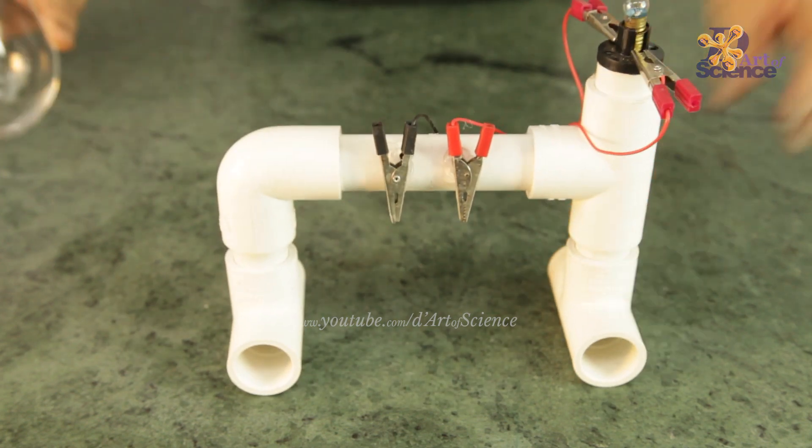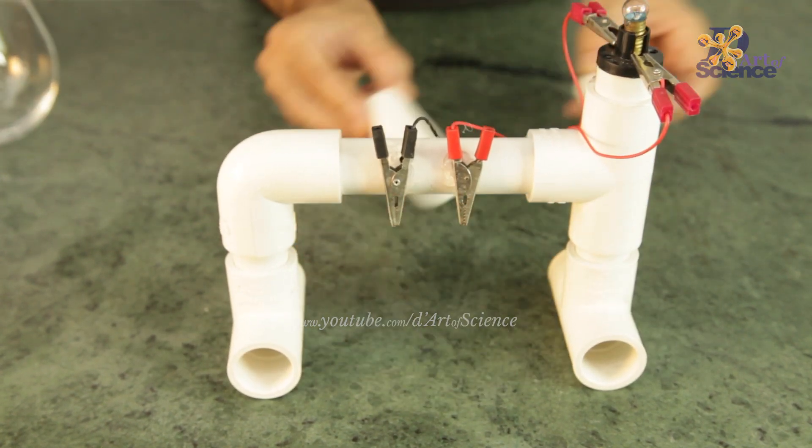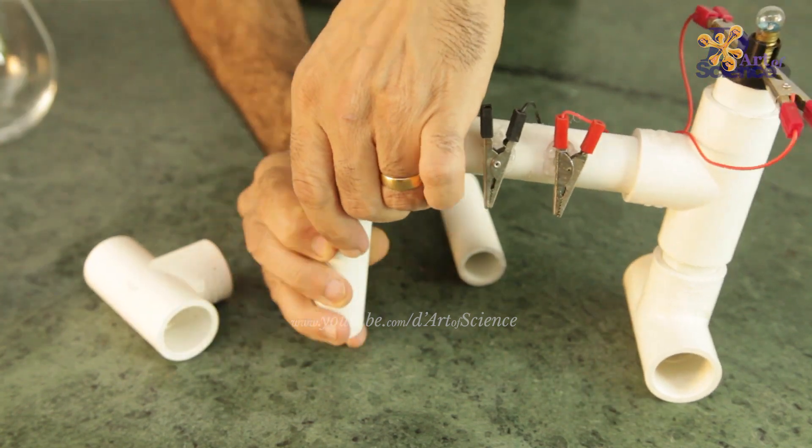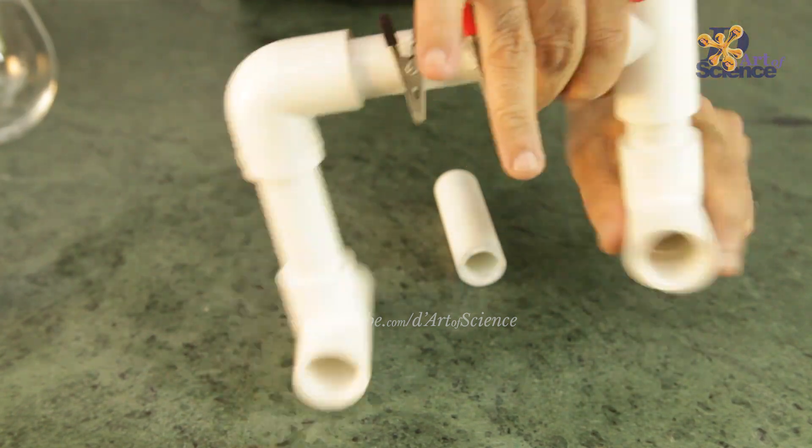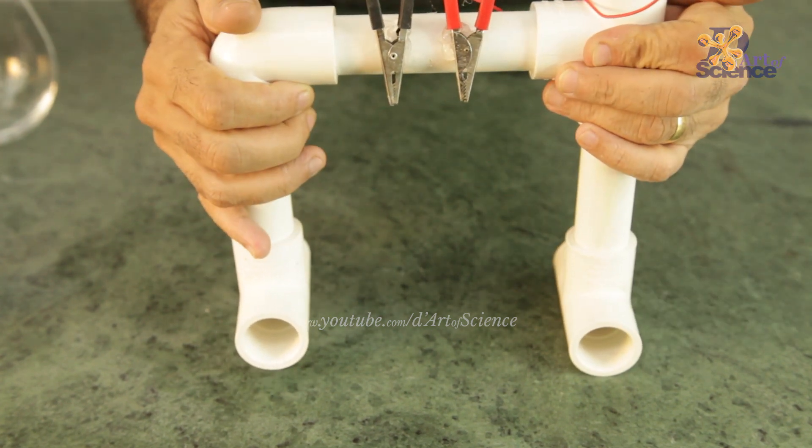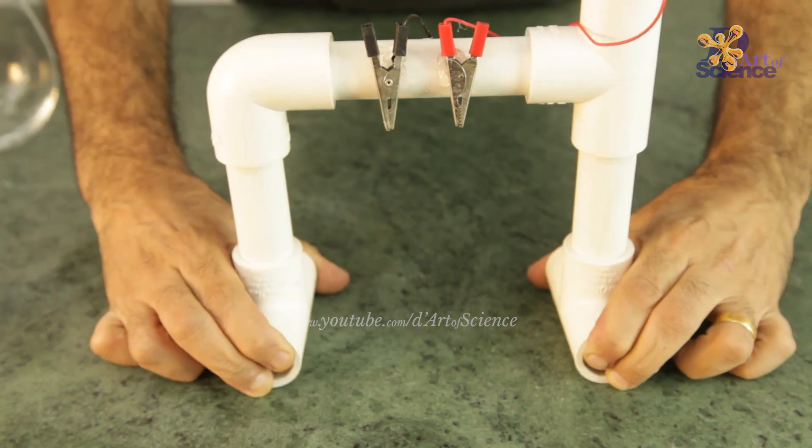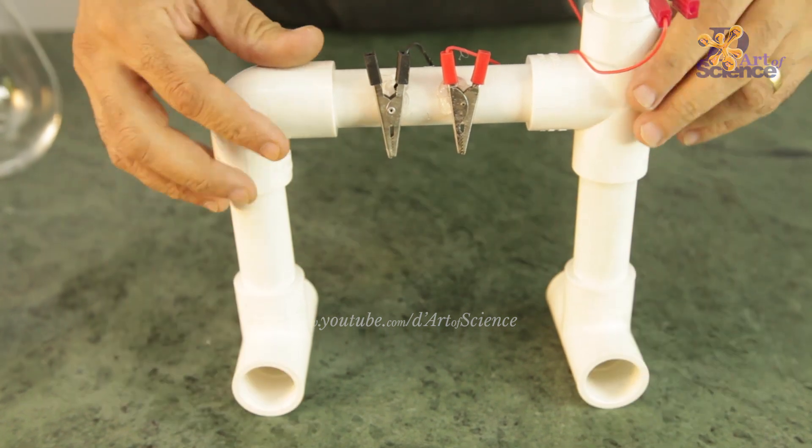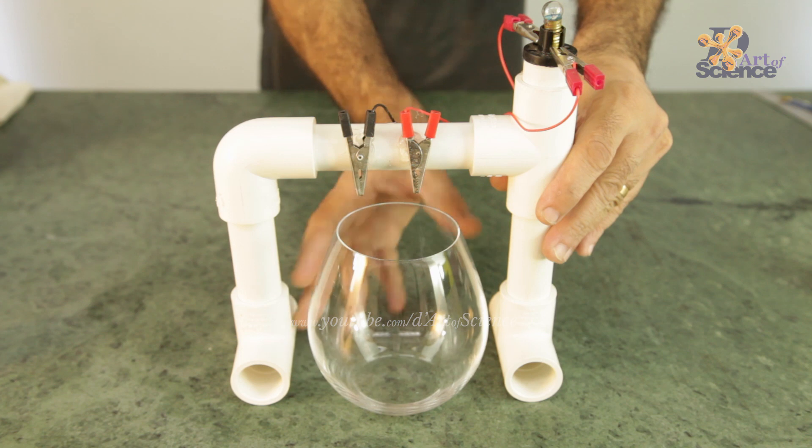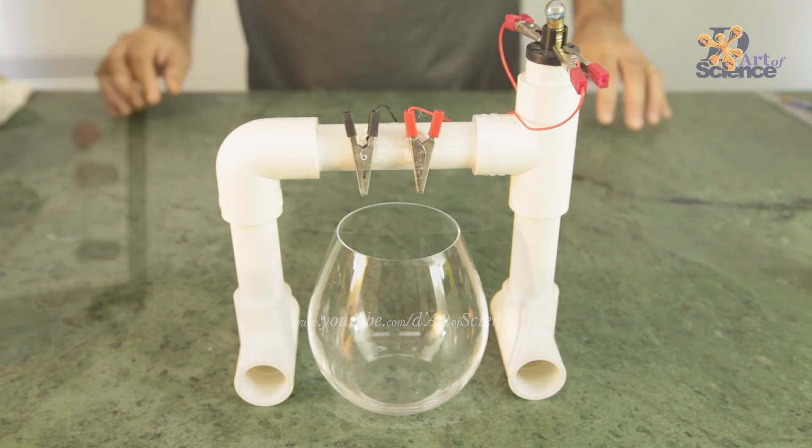This time we will use a bigger glass. So first we need to lengthen the legs of our cute little animal structure. We need two pipes of 7 cm each. These should be as the same diameter as the ones that are used in the structure. We will replace the small legs with these long legs. I am sure some of you must be thinking, why is it not that easy to become tall in real life as well. Now that the glass fits easily, I can proceed to explain how to do this experiment.